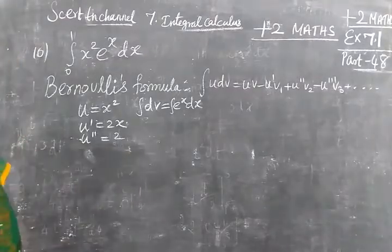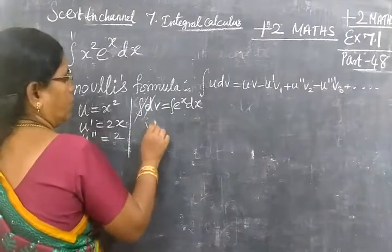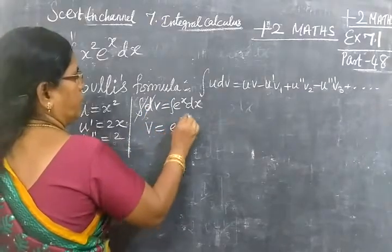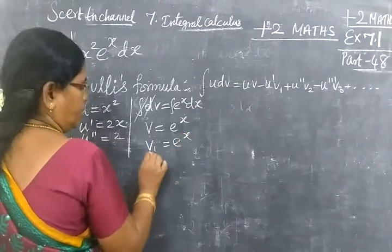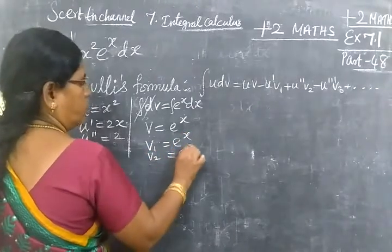Now here, integral dv gives v equal to e power x, then v₁ equal to e power x, then v₂ also e power x.